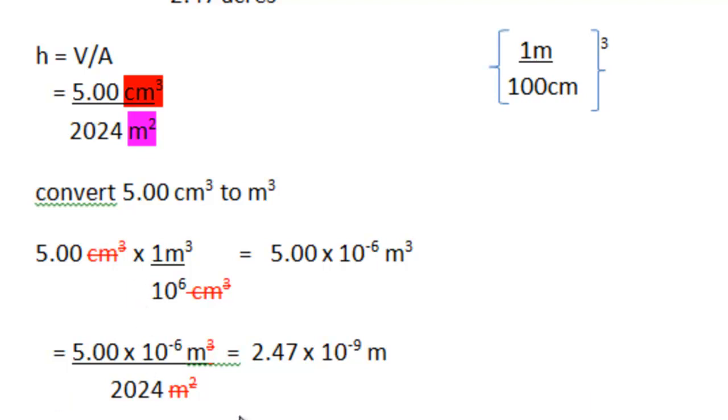Dividing the numbers, we get 2.47 times 10 to the minus 9th. And the unit of meters comes from the meter squared canceling out entirely, and the cubic unit gets canceled out. And what we're left with in the numerator is just meter.